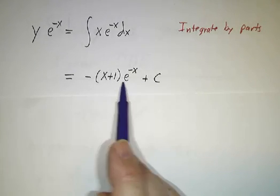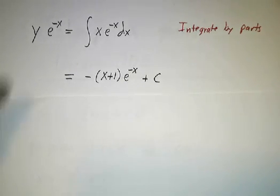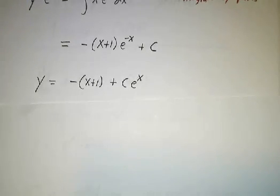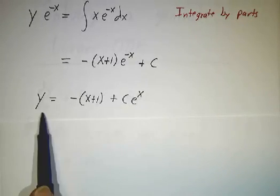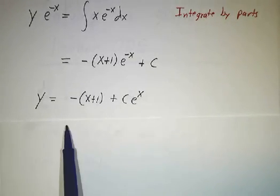Okay, now that we have this, all we have to do is multiply both sides by e^x. And we get that y is -(x+1) plus Ce^x. That's the most general solution to the differential equation.